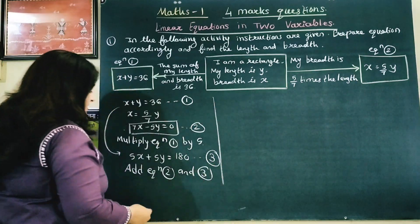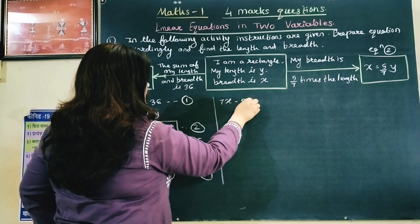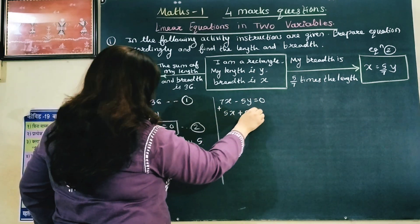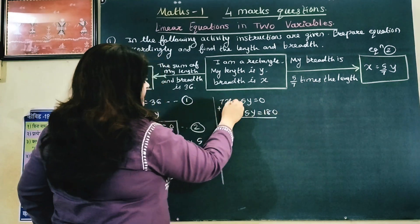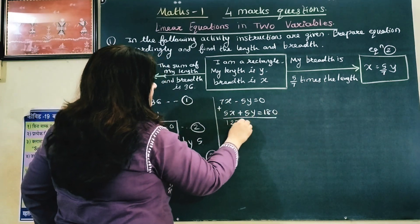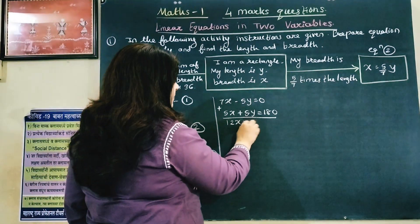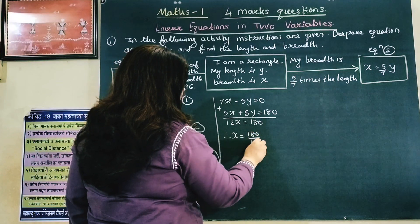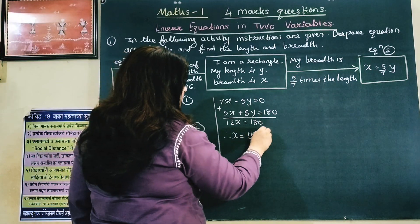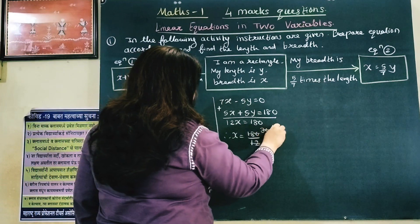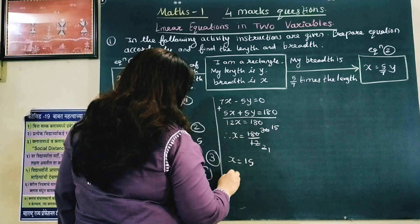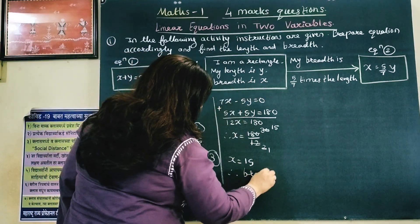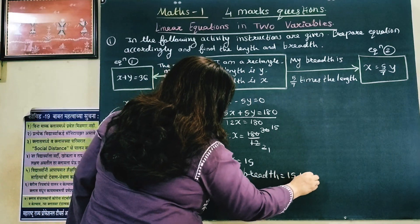Now add equations 2 and 3. 7X minus 5Y equals 0, plus 5X plus 5Y equals 180. The 5Y terms cancel, giving 12X equals 180. Therefore X equals 180 divided by 12, which equals 15. So breadth equals 15 units.